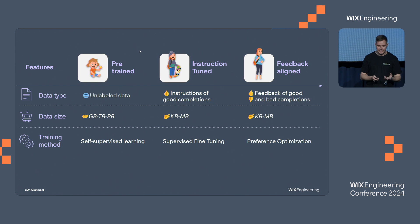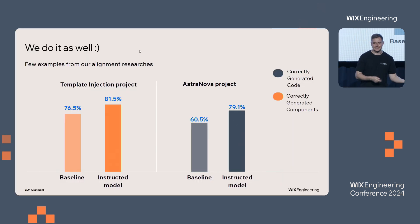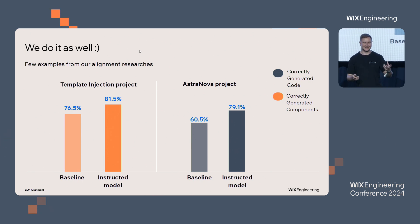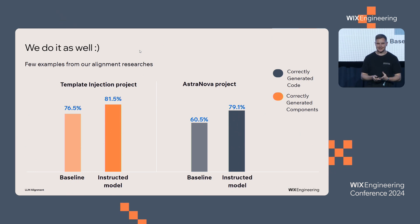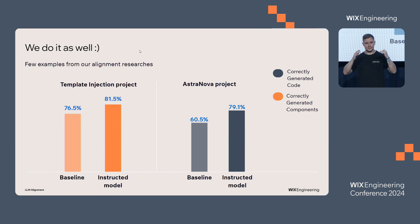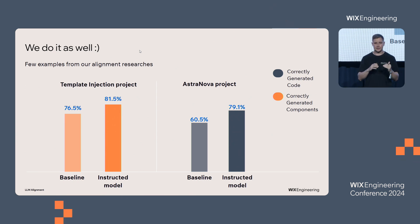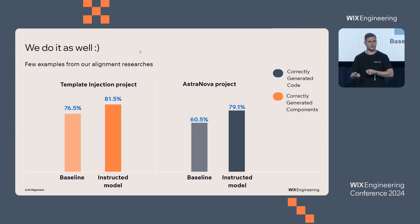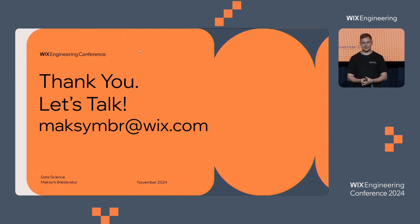We do this at Wix as well. We have a few use cases from our alignment research: one is template injection, where we inject content into a template, and another is Astronova — you probably heard about it; if not, stay tuned, it will be released in Q1. Comparing the aligned or instructed model to a baseline, we got much better performance — sometimes 5 to 20% improvement, which is a huge achievement. If you think you have a use case where alignment or fine-tuning could help and you can get the data, come to us and let's talk. Thank you.